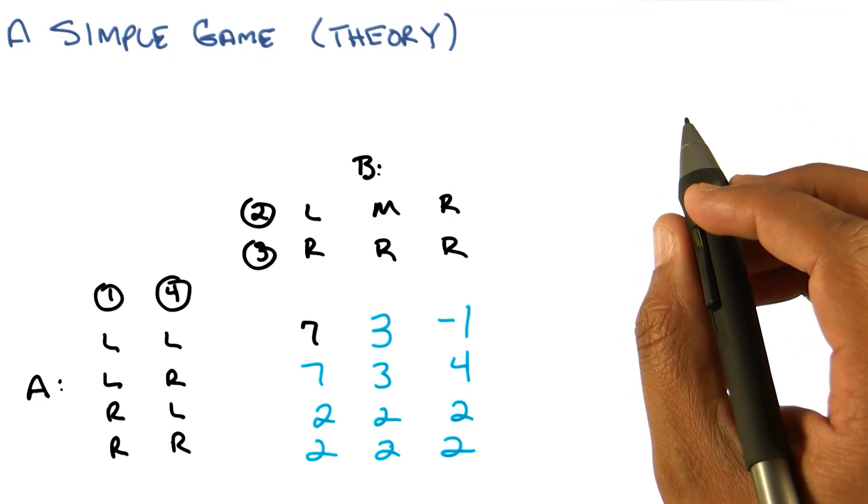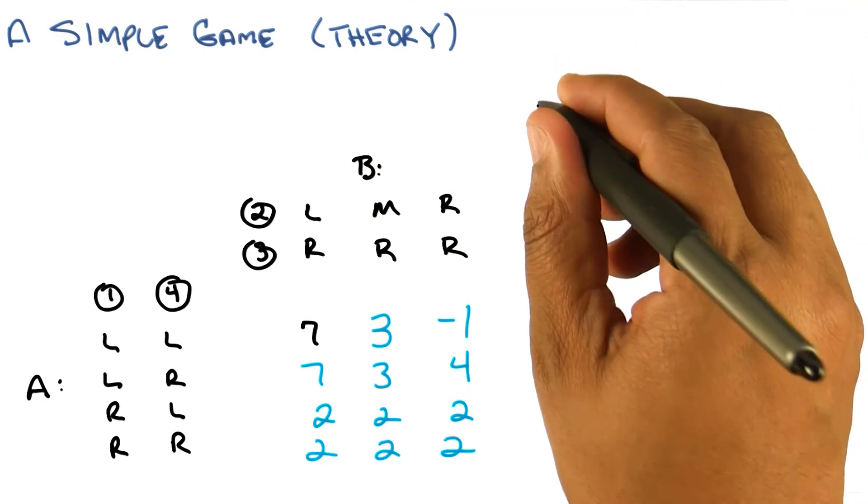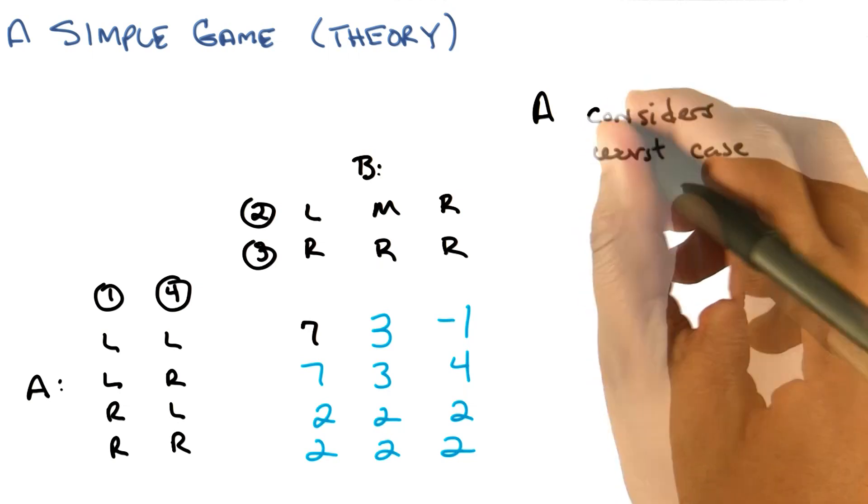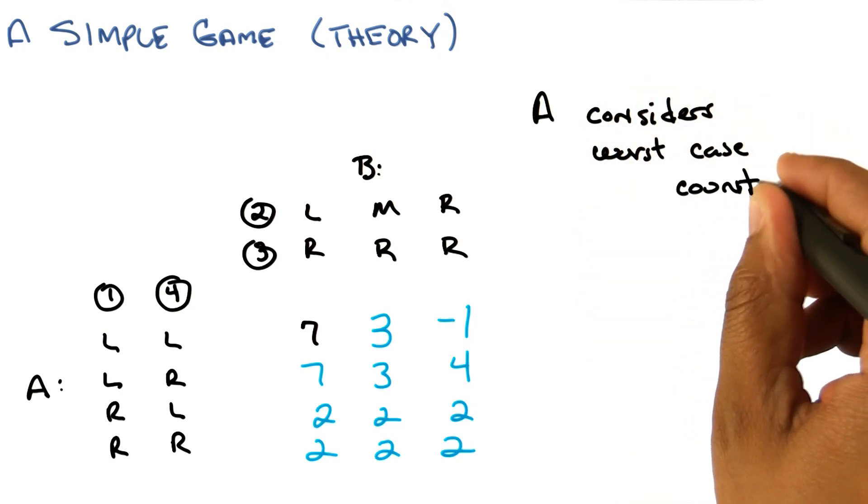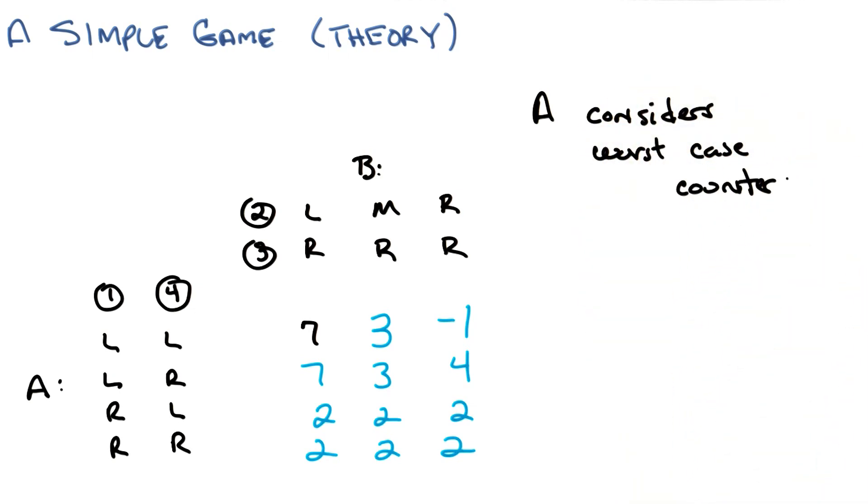So in particular, the way I heard you write it down is that A must consider the worst-case counter-strategy by B. I see, because when A chooses the row, then B is going to make things bad for A along that row. So that's the counter-strategy you mean.